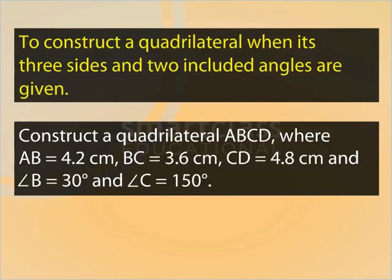So, let us first construct a quadrilateral ABCD, where AB is 4.2 cm, BC is 3.6 cm, CD is 4.8 cm, and angle B is 30 degrees, and angle C is 150 degrees.